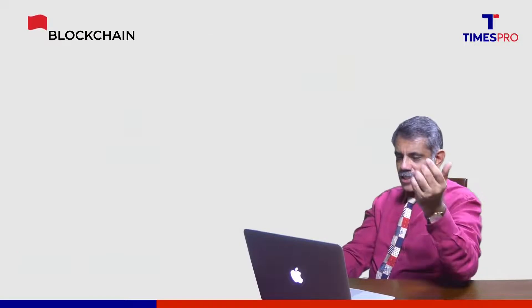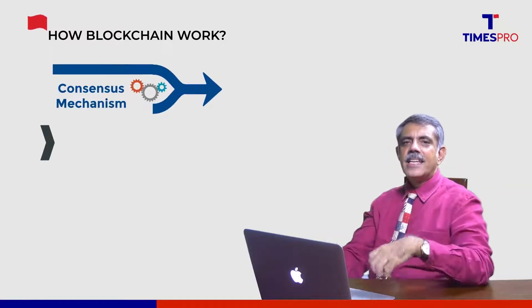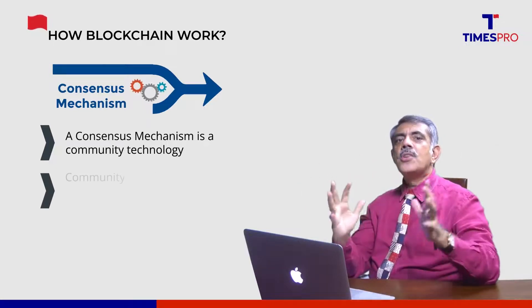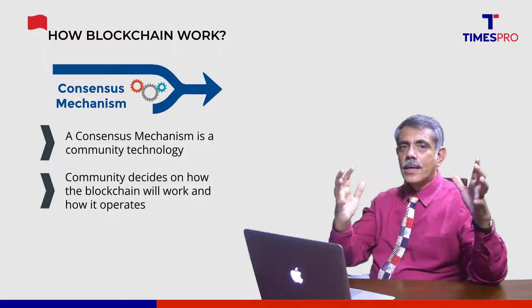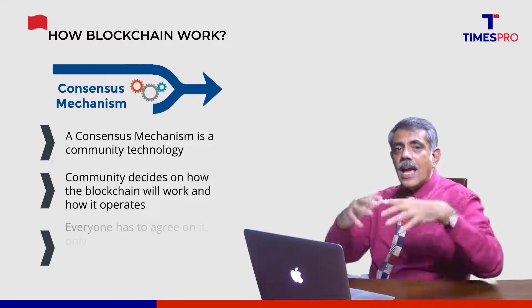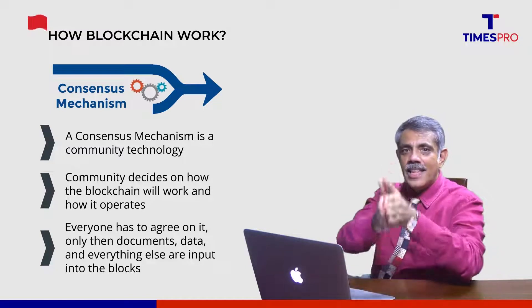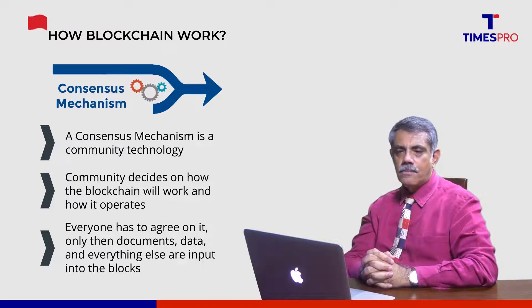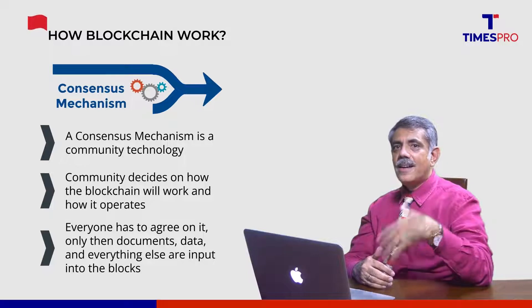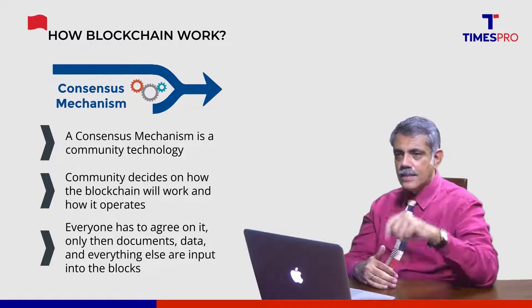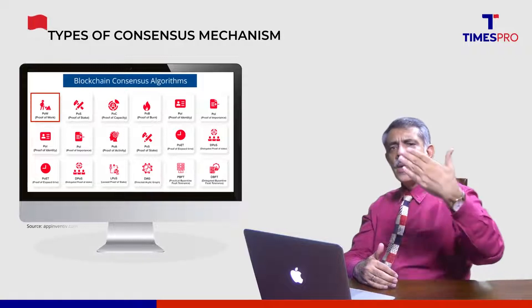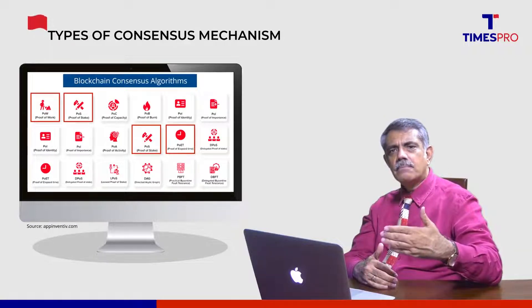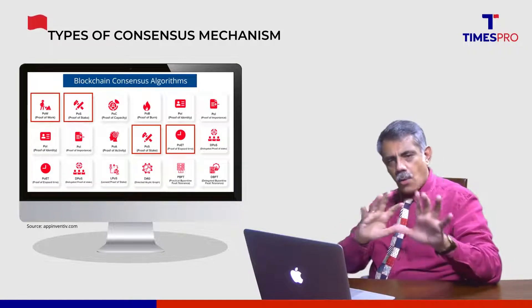How does it work? It works in many ways, most of which are called consensus mechanisms. It is a community technology where a community decides how the blockchain will work and operates — everyone has to agree, and only then are documents and data input into the blocks. It's called consensus. There are many types of consensus: proof of work, proof of stake, proof of elapsed time, quite a few. More on that a little later.